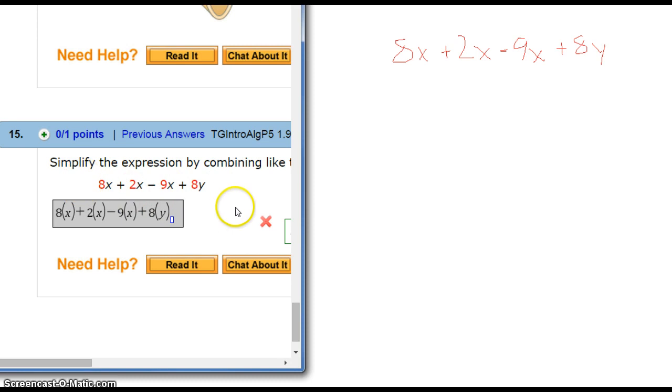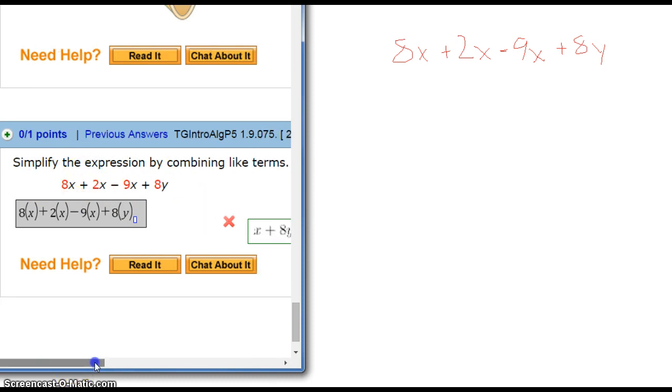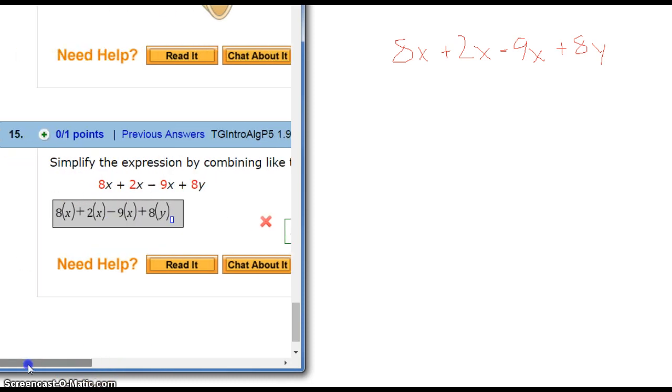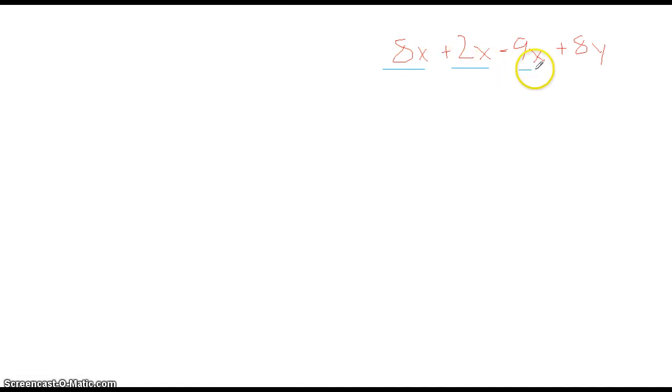And the idea on this one is to simplify by combining like terms. All that means is we can put all the x's together, and instead of having three separate terms with x, we'll just have one term with x. And if there were more y's, we would do the same with y, but there's just one term with y already, so y's actually done.